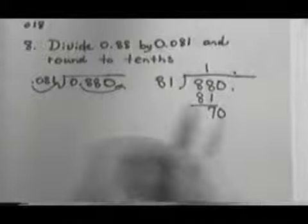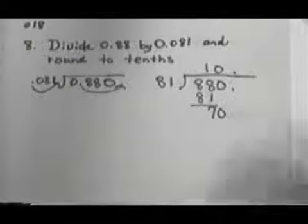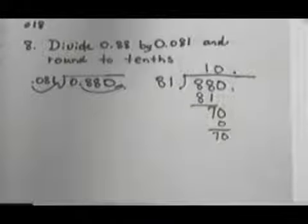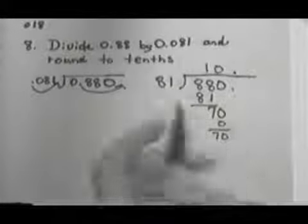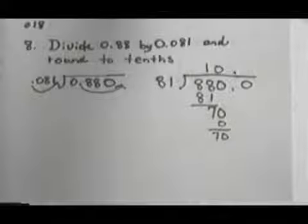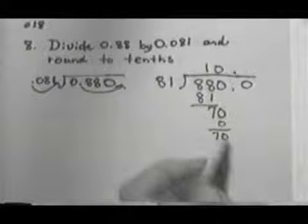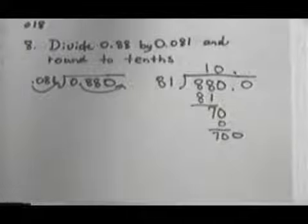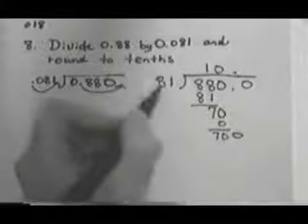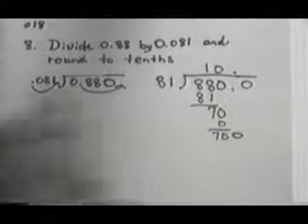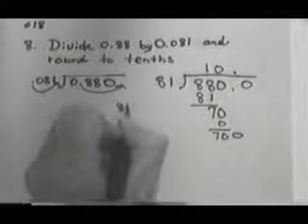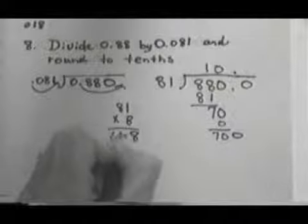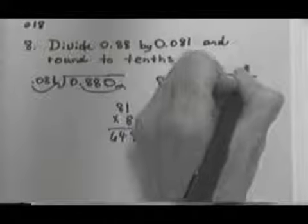81 will not go into 70. So I have to put a 0 up here to hold the place. And now I need to keep on going. So I'm going to have to add a 0 over here. So I'll be able to see what my tenths are going to be. So then I can bring that 0 down and say 81 to 700. Well, estimate 8 will go into 70 8 times. So let's see what 81 times 8 would be. That's 648. So that's going to be okay. So we'll put our 8 here.